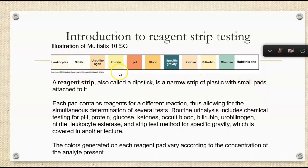This is an example of the reagent strip, and in each of these pads, all of the chemicals and reagents required for each different chemical reaction are present. A lot of these reactions will be repeated when we talk about clinical biochemistry and serum testing, utilizing immunoassays, enzymatic methods, colorimetric or nephelometry methods. So you really need to pay close attention because this is almost your introduction to clinical biochemistry.